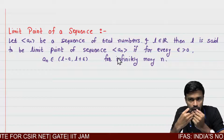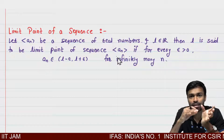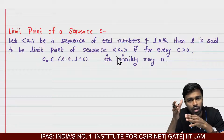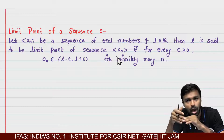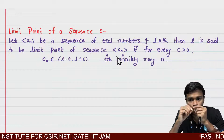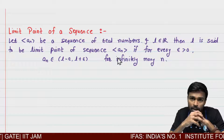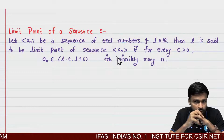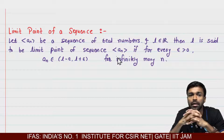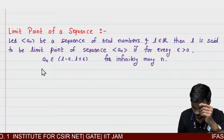So you give me any epsilon, and I will check that interval (L minus epsilon, L plus epsilon) and count how many a_n are in that set. If I count those a_n, it should be infinite — not finite. Since a_n is itself indexed by natural numbers, it is a countably infinite set. If a_n belongs to (L minus epsilon, L plus epsilon) for only finitely many n, then that point L is not a limit point.